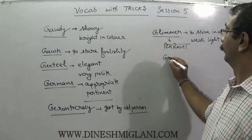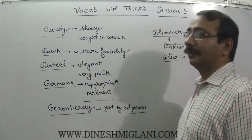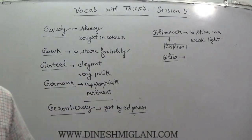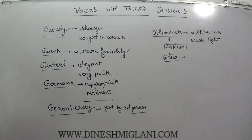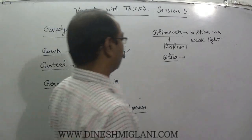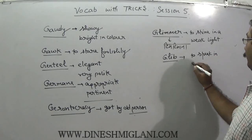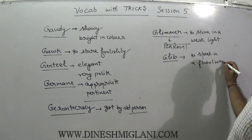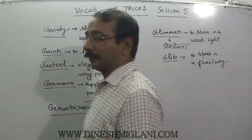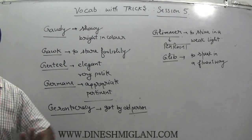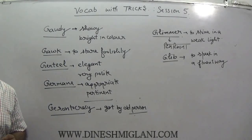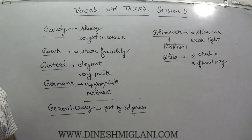Next word is glib. We associate glib with Mirza Ghalib — Mirza Ghalib was a great Urdu poet who spoke very fluently. Glib means to speak in a very fluent way and in a confident way. He is a very glib person — it means that person gives every answer very fluently and quickly with appropriate responses. To speak in a very fluent way — that is glib, associated with Mirza Ghalib.